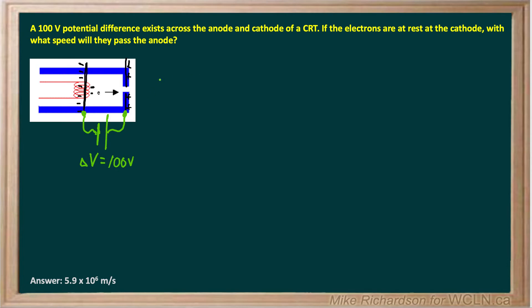We want to know how fast they're going to emerge from that anode. In a question like this, if the electrons are initially at rest, they're loaded up with some potential energy. They want to be repelled from that plate and cross the gap.